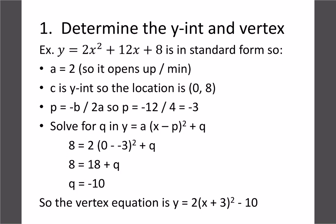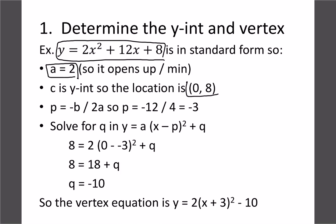This method will always work, it just takes a little longer. Here's our equation: 2x squared plus 12x plus 8. We know a equals 2, so it's positive and opens upwards. The c value, 8, is our y-intercept, so we have a coordinate at (0, 8). Using the formula p equals negative b over 2a, with b = 12: negative 12 over 2 times 2 gives us negative 12 over 4, which is negative 3.